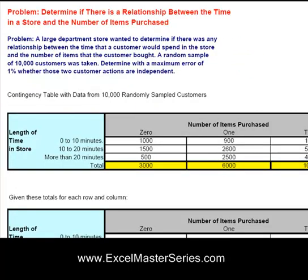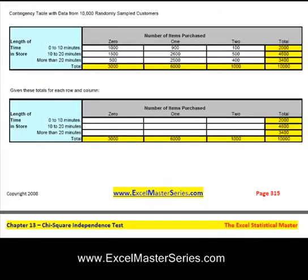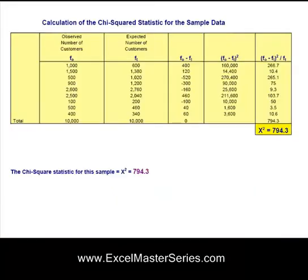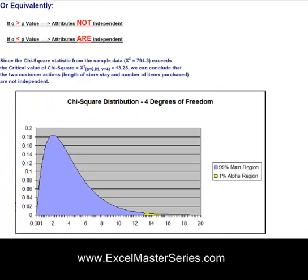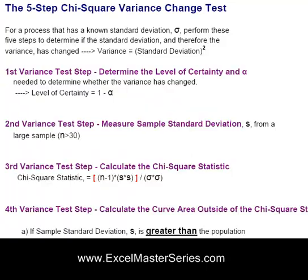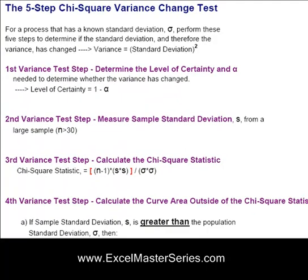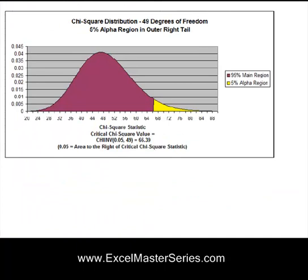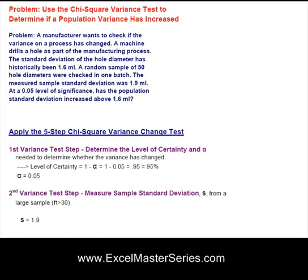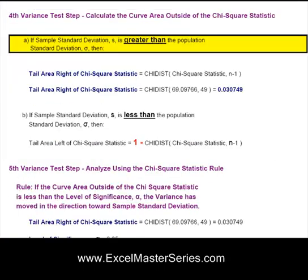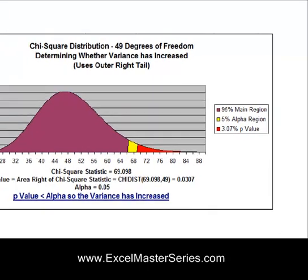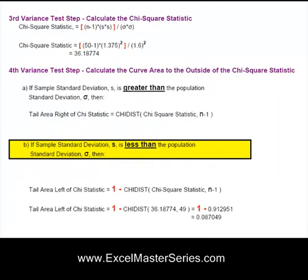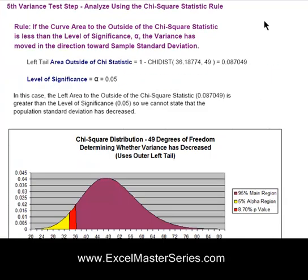Here's the chi-squared independence test — walking through how to set that up in Excel. It's not very complicated once you see how to do it. Each worked-out problem is shown with lots of screenshots and a detailed but simple explanation of what we just calculated, plus a graph at the end. Here's also the five-step chi-square variance change test — a couple of problems in this chapter, each using the five-step process, with a graph at the end of each problem.